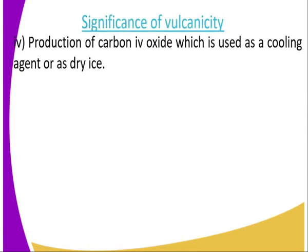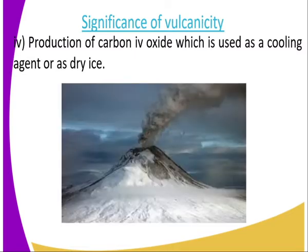Number four, we have the production of carbon dioxide, which is used as a cooling agent or as a drying agent. Carbon dioxide is emitted from a vent, and it is used as a drying or cooling agent.